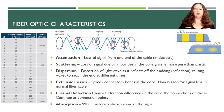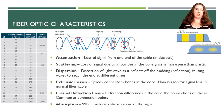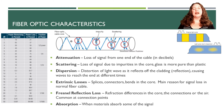We have a Fresnel reflection loss, which happens because of refraction differences in the core, the connection, or even just air. Just the air in the spacing can cause this reflection loss, and it usually happens at connection points where you cut your cable and put a connector together. Finally, absorption is when materials actually absorb some of the light — it isn't ever 100% reflected. These are all different things that can cause attenuation or loss of signal in your fiber optic cable.